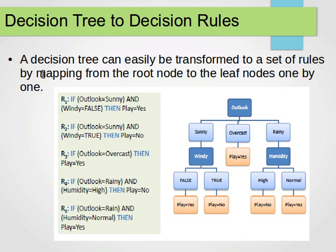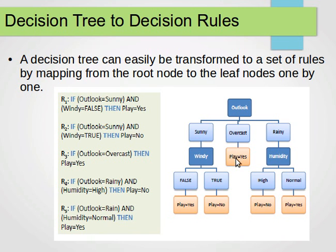One more thing: a decision tree can easily be transformed into a set of rules by mapping from the root node to each leaf node. For example, Rule 1: if Outlook is sunny AND windy is false, then play is yes. If Outlook is sunny AND windy is true, then play is no. If Outlook is overcast, then play is yes. If Outlook is rainy AND humidity is high, then play is no. If Outlook is rainy AND humidity is normal, then play is yes.